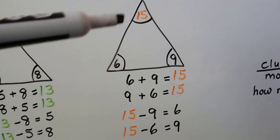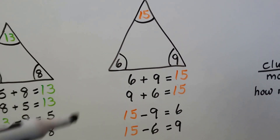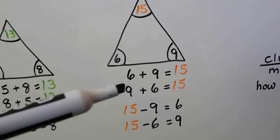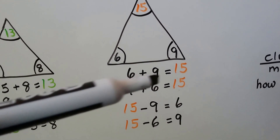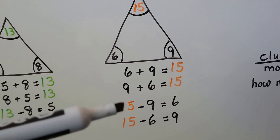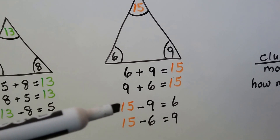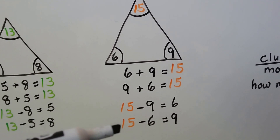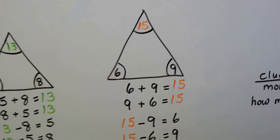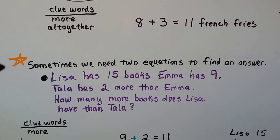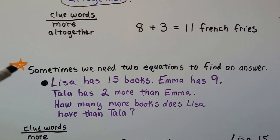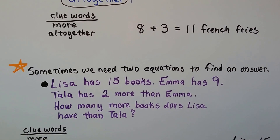For 15, with 6 and 9: 6 plus 9 is 15, or 9 plus 6 is 15, and the sum becomes the minuend in the subtraction sentences — 15 minus 9 equals 6, and 15 minus 6 equals 9. It's like everybody gets a turn. Sometimes we need two equations — two number sentences — to find an answer.